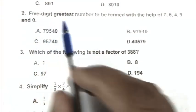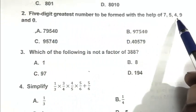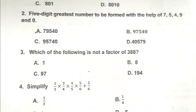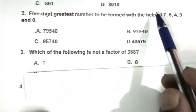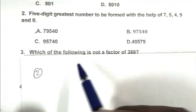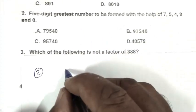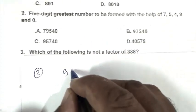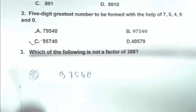Question number 2: Five-digit greatest number to be formed with the help of 7, 5, 4, 9, and 0. So friend, we have to form the greatest number. We have to write the digits in descending form. That is 9, after that 7, after that 5, 4, 0. So C is the right answer.